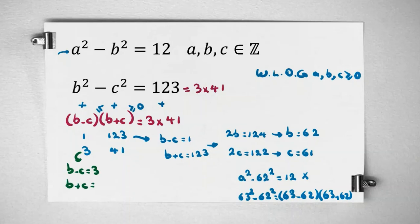Second case: b minus c equals 3, b plus c equals 41. If we add these two equations, 2b equals 44, b equals 22. 2c equals 41 minus 3, which is 38, over 2 is 19. So b and c are this.